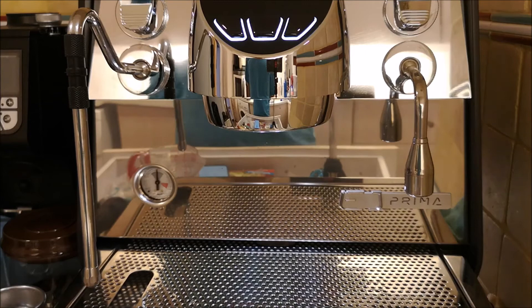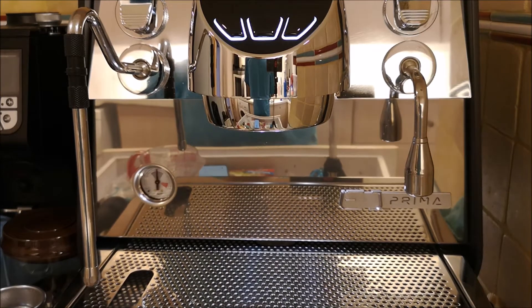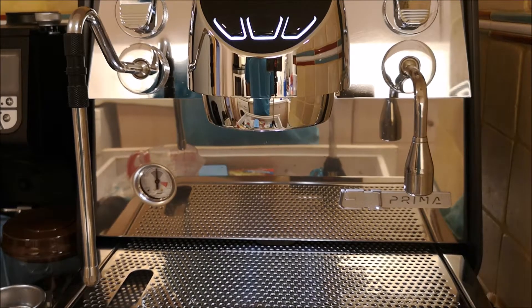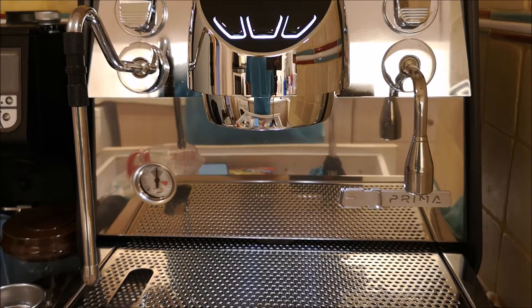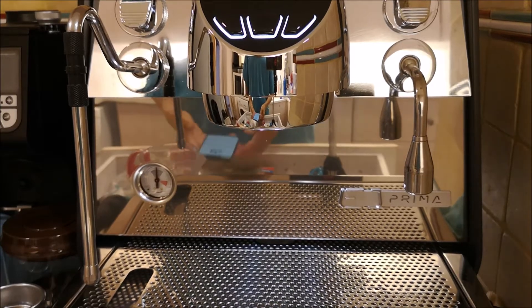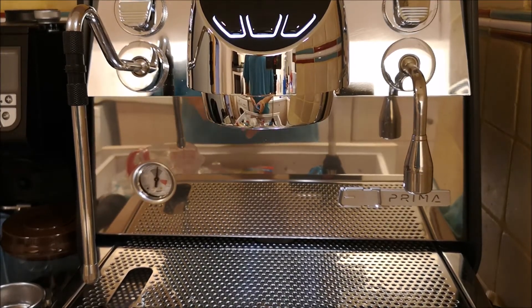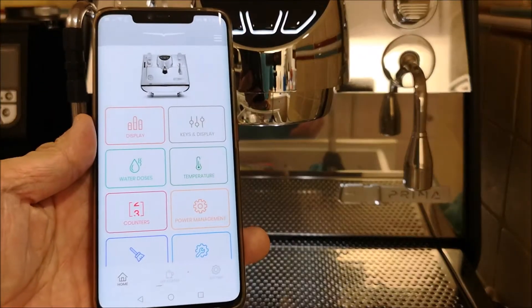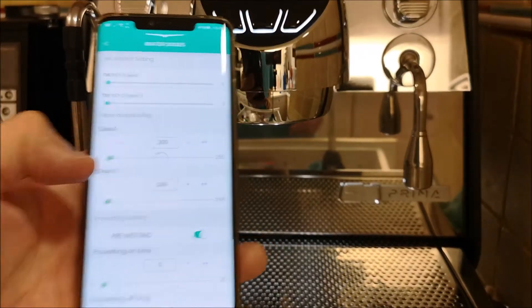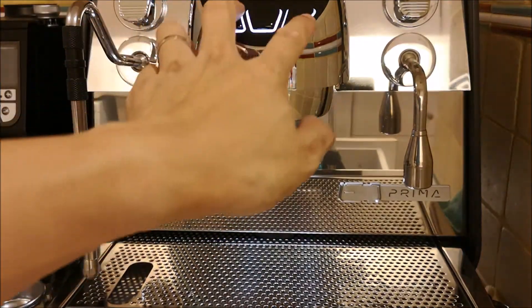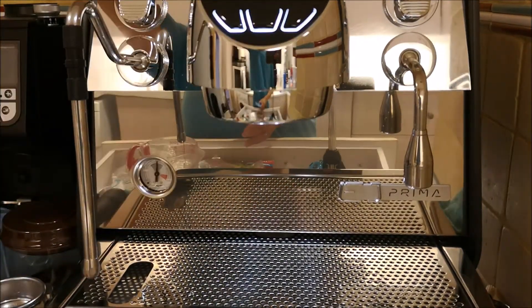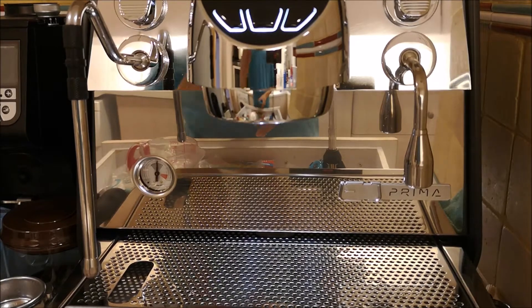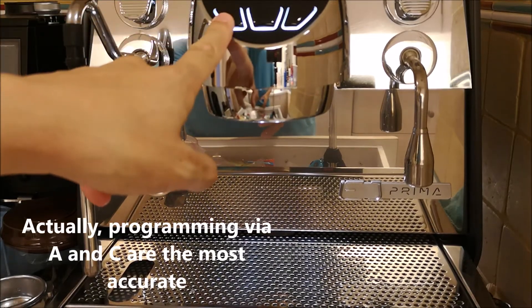Hey everyone, welcome back. This episode we'll have a look at the volumetric dosing from the Primer. I'll show you the app first. There's two ways of doing this: you can either use the app to set your dosing, or you can use the buttons here to set your volumetric dosing. I'll show you both.